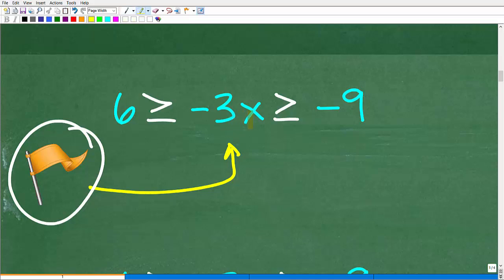To get x by itself, what are we going to have to do? We're going to end up having to divide this by -3. Now, anytime you're dealing with inequalities, if you have to divide an inequality by a negative value, or if you have to multiply to solve or to get that variable by itself by a negative value, you need to be on alert.